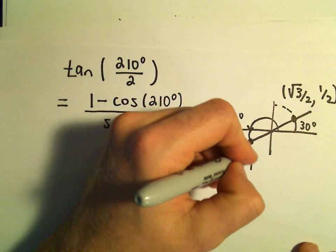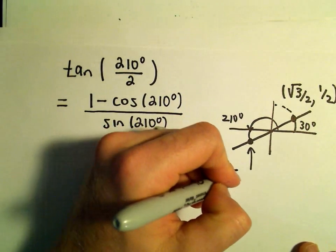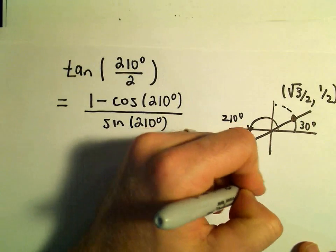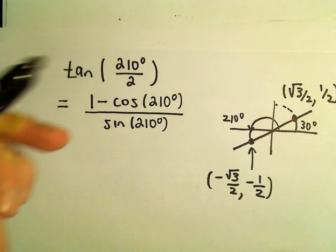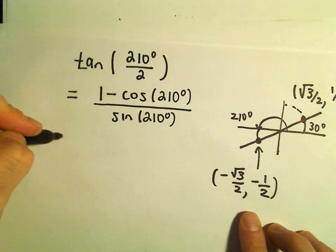So that means at 210 degrees, well, they would both be negative in quadrant 3. So, okay, so now I've got my values that I need.